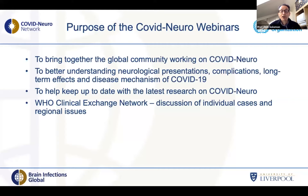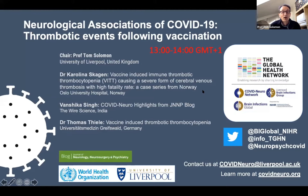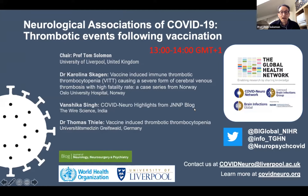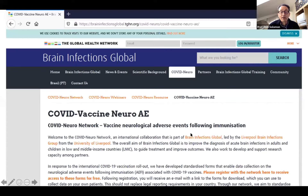The purpose is to bring the global community working on COVID neuro together — even if they work in the same department and have never met until joining one of these webinars. We want to better understand the neurological presentations, complications, long-term effects and disease mechanisms of COVID-19, and keep up to date with the latest research. Immediately after this one-hour webinar we have the WHO Clinical Exchange Network. Today we have Karolina Skagen from Oslo University Hospital in Norway, then Vanshika Singh doing the very popular JNNP blog, and then Dr. Thomas Thiel, co-author on the New England Journal of Medicine paper on vaccine-induced thrombotic thrombocytopenia. If you're seeing these thrombotic events and want to capture data, we have freely available data capture forms on the Brain Infections Global website.